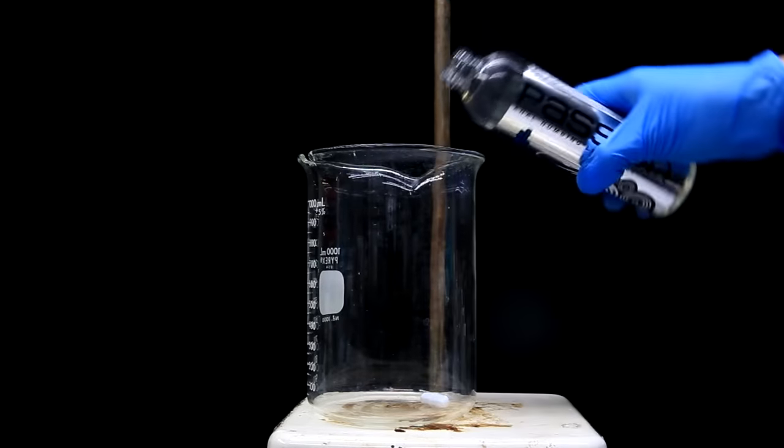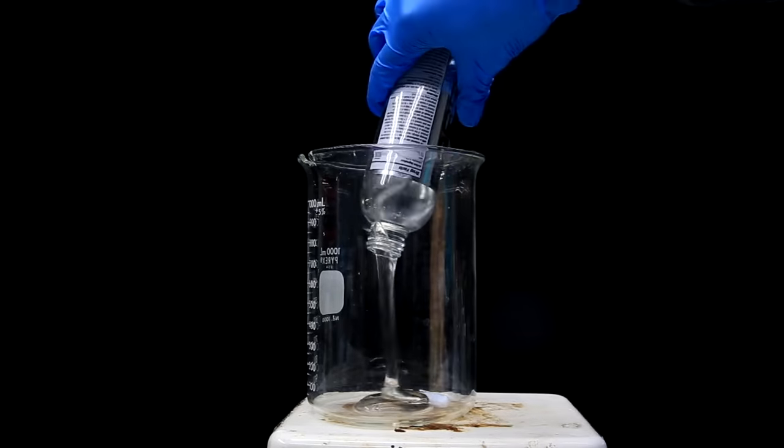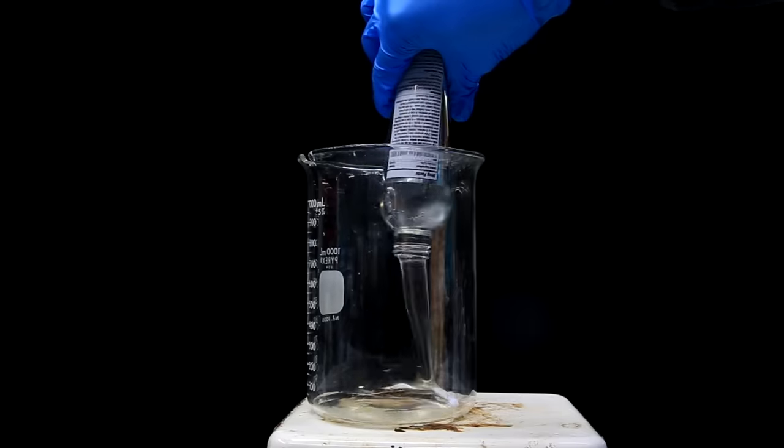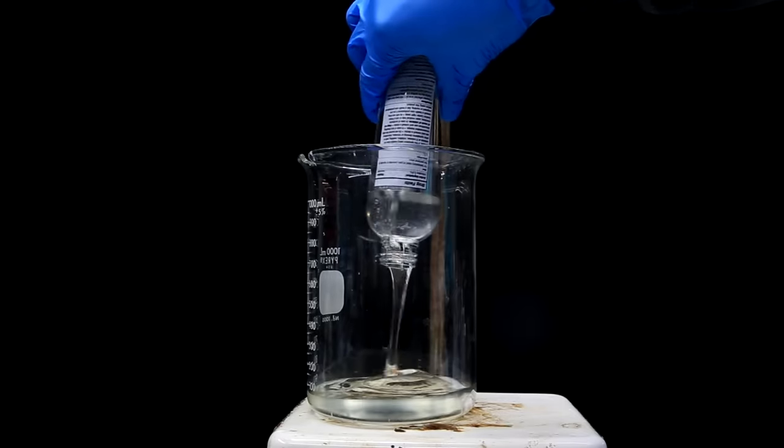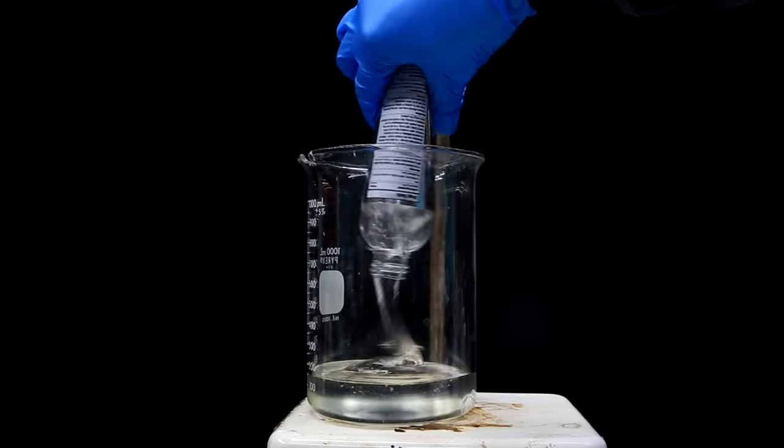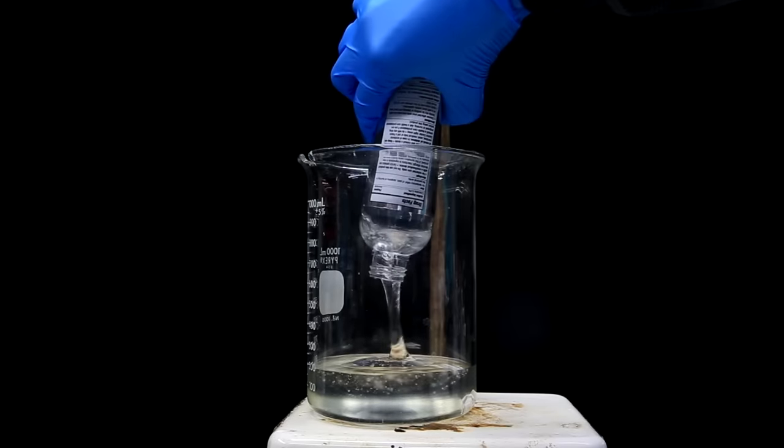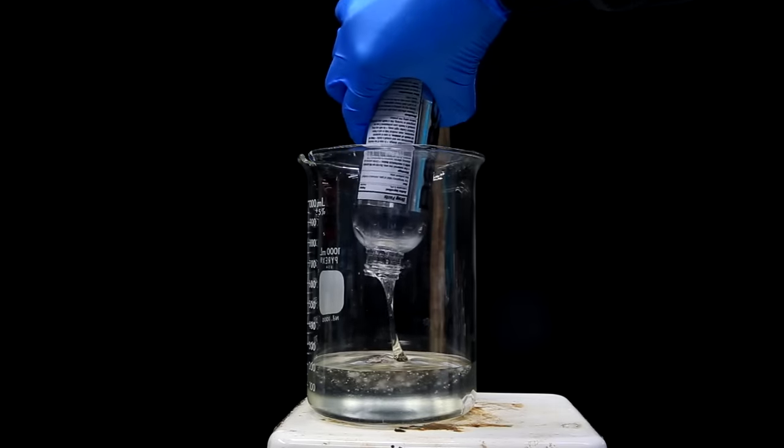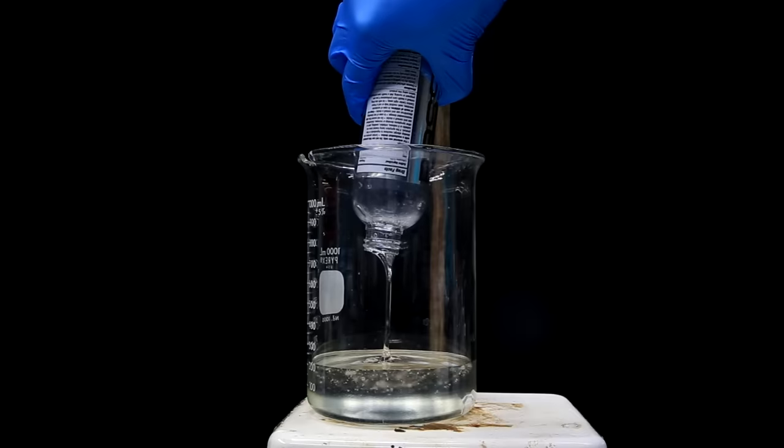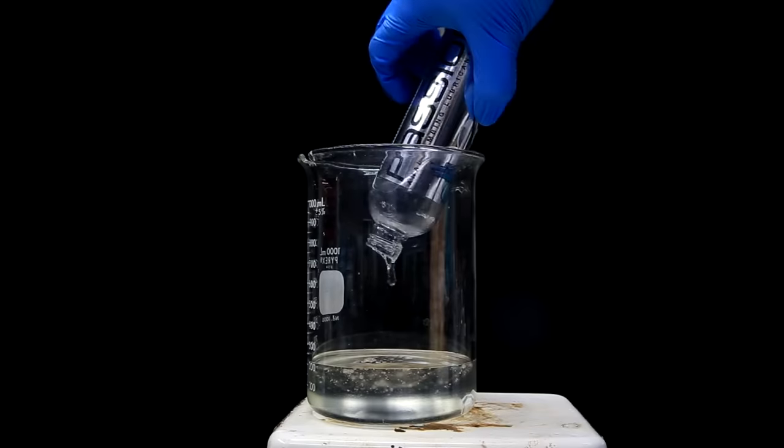We then open up the brand new, never before used bottle of lube and pour it into a beaker. You can see it's pretty goopy so I squeeze the bottle and do my best to get out as much as possible. However, there's always going to be a little bit left in the bottle, but that's okay because we'll wash it a few times.